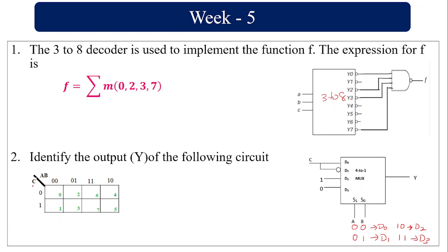So here I have taken A, B on this side and C on this side for my convenience. The K-map cell numbering: with A,B on one side and C on the other, the cells are 0, 1, 2, 3, 4, 5, 6, 7.